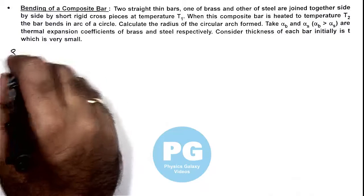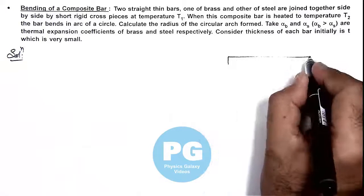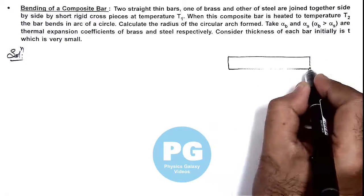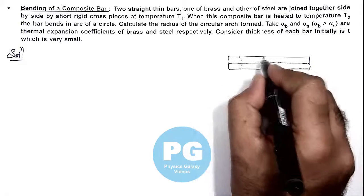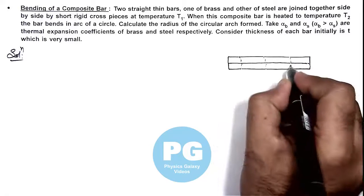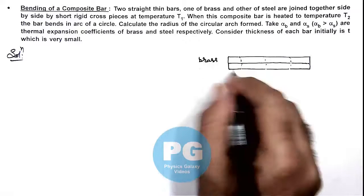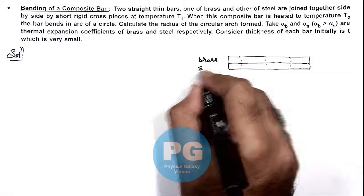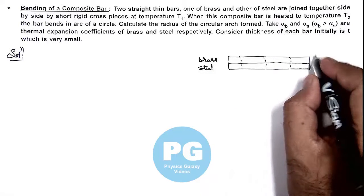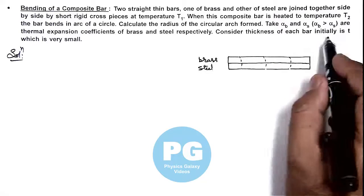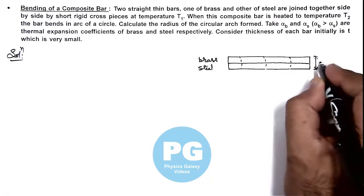Now in the solution, we can draw the situation where we are having two bars which are connected side by side, and these are connected by cross pieces like this. This one is a brass bar, and this one is the steel bar. In this situation, both are having thickness t. We are given that thickness of each bar is t, so the total thickness of this composite bar is 2t.